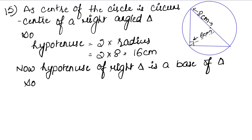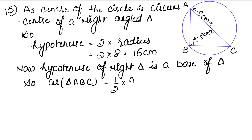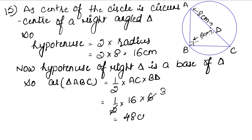So area of triangle ABC = half × base × height. Base is AC = 16 cm (the hypotenuse we found), and height is BD = 6 cm. So area = ½ × 16 × 6 = 48 cm². The area of this triangle is 48 cm².